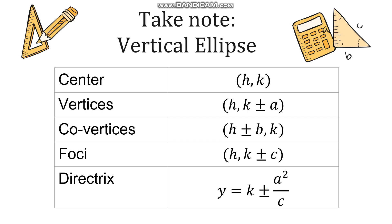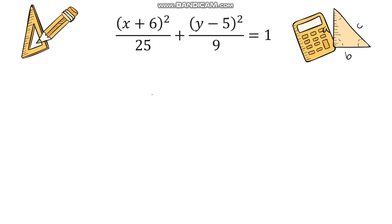You just have to get the values of h and k, the value of a which is half of the major axis, the value of b which is half of the minor axis, and then find c using the square root of a² minus b². After that we can identify all the parts.